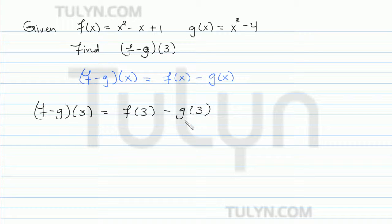We have to find f of 3 and g of 3. Now f of 3 is just f of x when x is equal to 3. So we replace all the x's we see with 3's. This becomes 3 squared minus 3 plus 1.